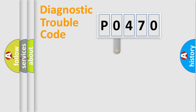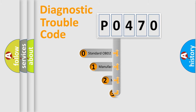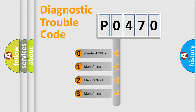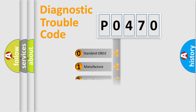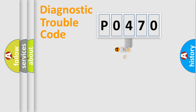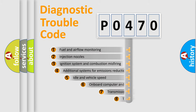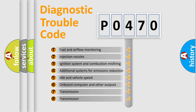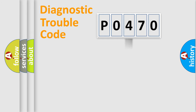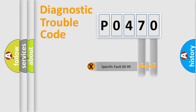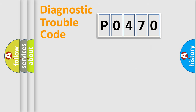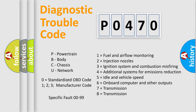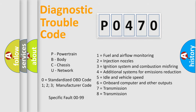This distribution is defined in the first character of the code. If the second character is expressed as zero, it is a standardized error. In the case of numbers 1, 2, or 3, it is a more specific expression of a car-specific error. The third character specifies a subset of errors. This distribution is valid only for the standardized DTC code, and only the last two characters define the specific fault of the group.